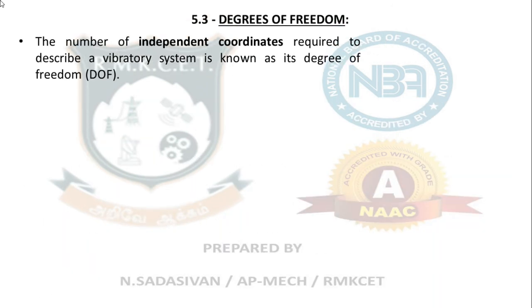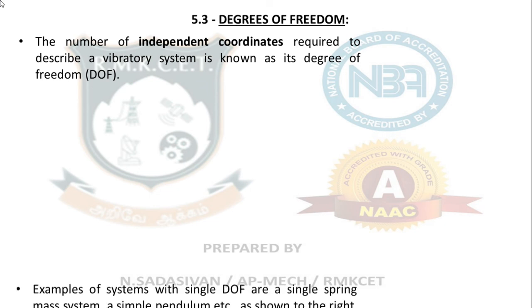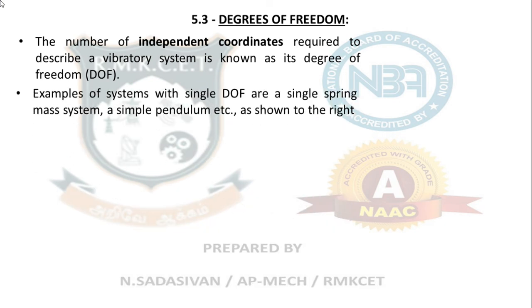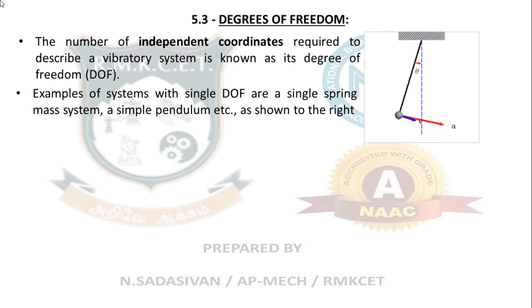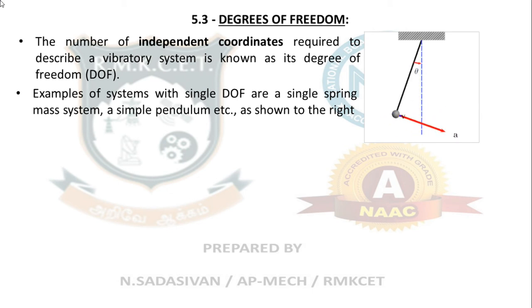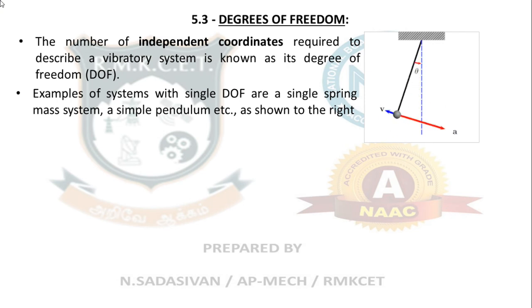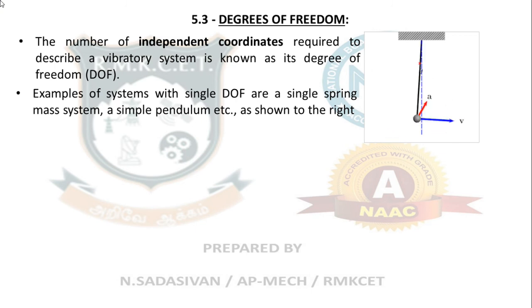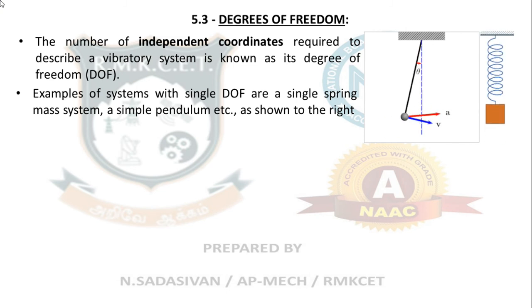Degrees of freedom: how many independent coordinates are required to completely define the position? If I tell you theta, you will clearly know where the pendulum is — just that one value. Similarly, if I tell you the deflection length of the spring, you can tell where the entire system is located. That is a single degree of freedom vibrating system.